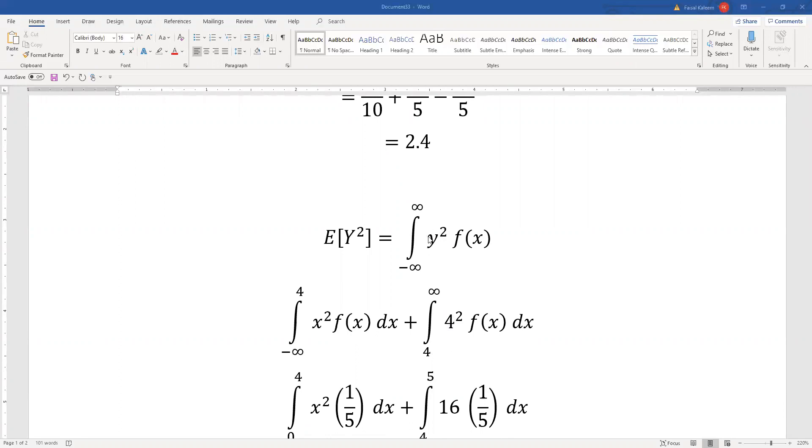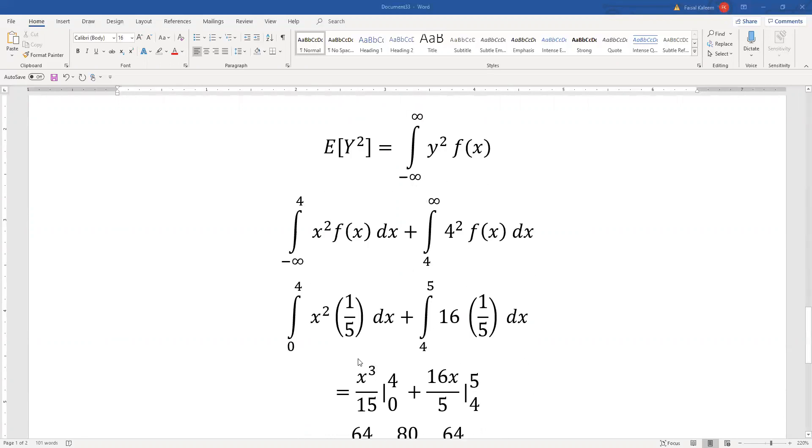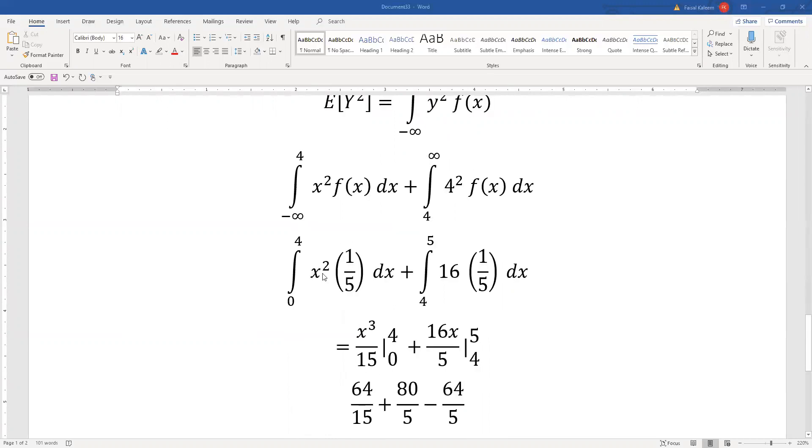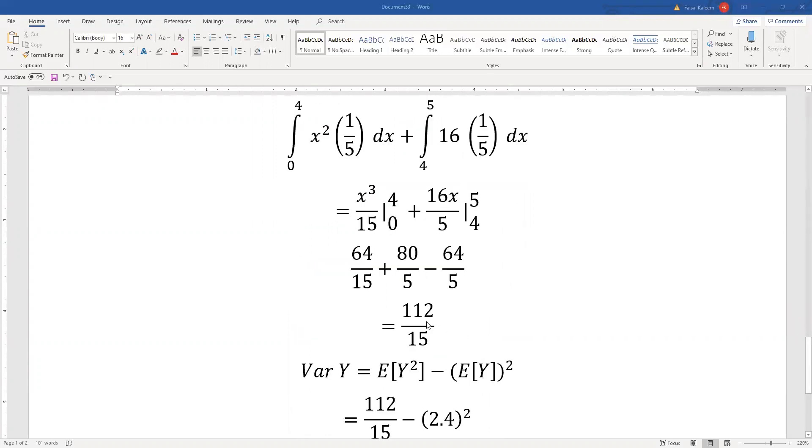You're squaring this part and the f(x) remains the same. x squared and 4 squared is 16, f(x) is still 1 over 5. The integral of this is x cubed by 15 and this is 16x by 5. And eventually we get 112 by 15.